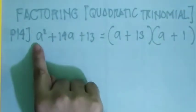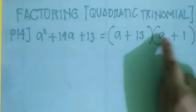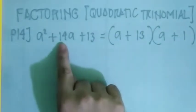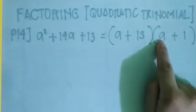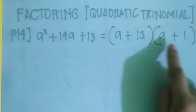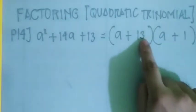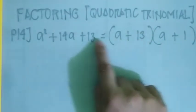a squared, ito yun 13, ito yun 13 times 1, 13 yung gitna, ito 13 times a, 13a. Then a times 1 is a, so 13a plus a is equal to 14a.